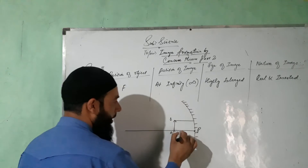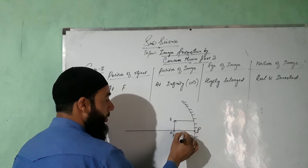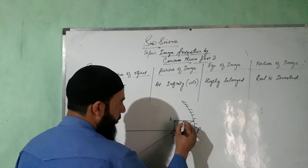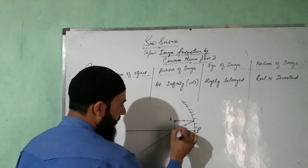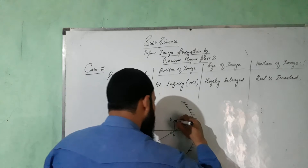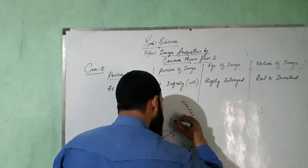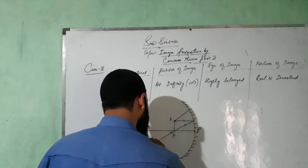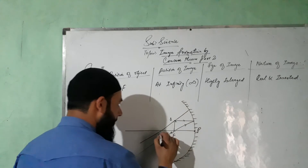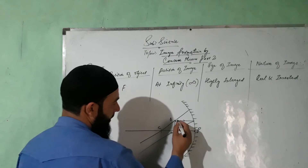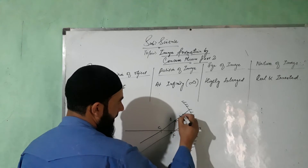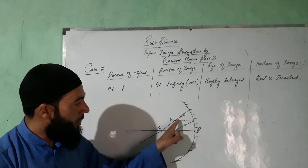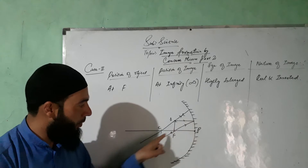This is a parallel ray, which is incident parallel to the principal axis. It passes through the focus. Here is the incident light, and then the second ray passes through the center of curvature C. This is the incident light and this is the reflected light — one incident ray parallel to the principal axis, reflected through the focus.